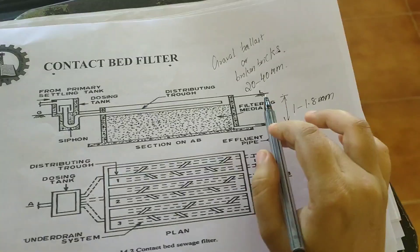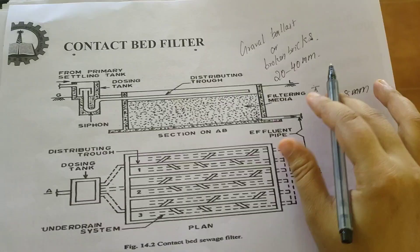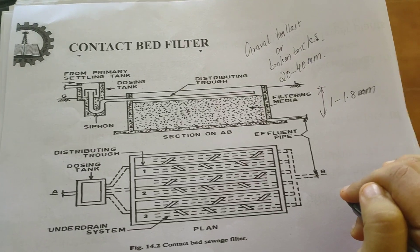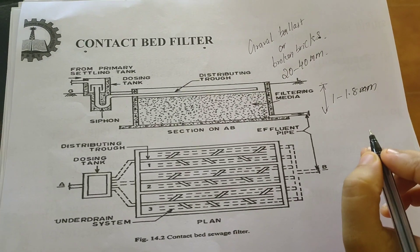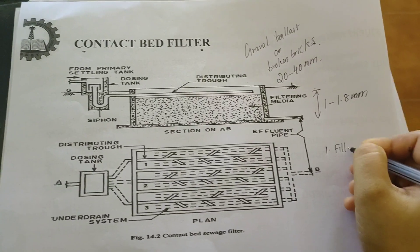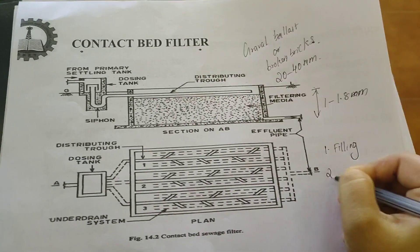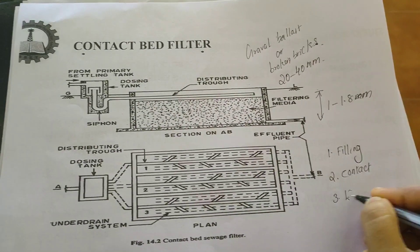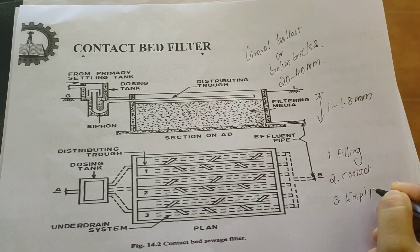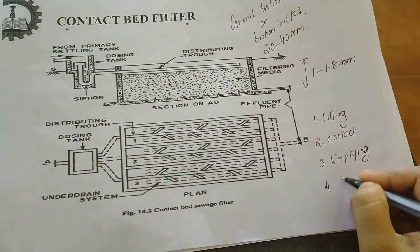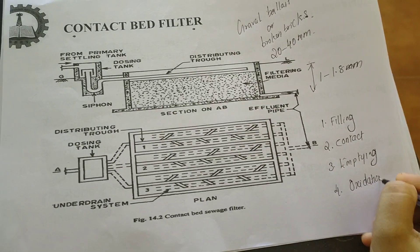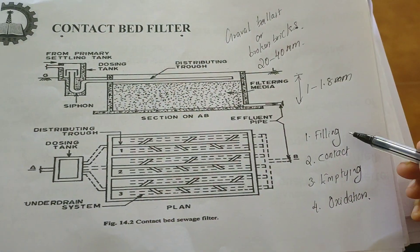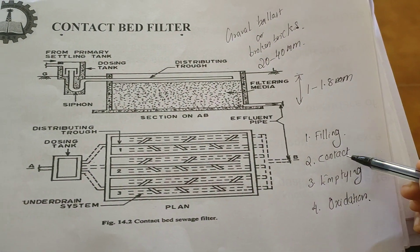So now we can move on to its operation. Its operation actually has four steps. The first one is filling, second one is contact, third step is empty, then fourth step is oxidation. So the contact bed filter will work on these four steps: filling, contact, empty, and oxidation.